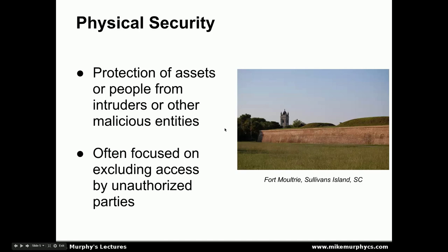Here, for example, is a wall on Fort Moultrie on Sullivan's Island. This wall is designed for several purposes. One is that if someone is invading by land, it would be difficult to scale this wall, providing a means to slow down an invader and thereby have a chance to launch a counterattack. This wall also directly faces the ocean and can be used as a seawall during storms and hurricanes. But the principle is the same — we're trying to keep out unauthorized parties, whether those be other people or water.